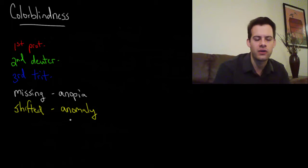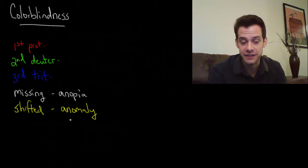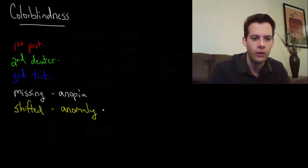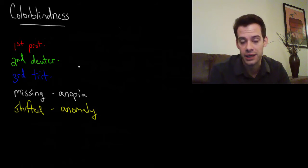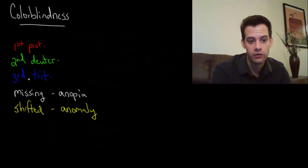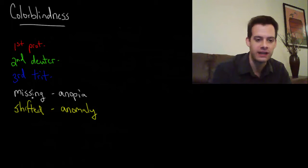Then another thing that can happen is that the cone's sensitivity can get shifted. And this is the more common type of color blindness, is that one of the cone types is shifted, usually the red or green. So if it's your red cone type, the long wavelengths that are shifted, it's called protanomaly. If it's the green, it's called deuteranomaly. And this is the most common type of color blindness, deuteranomaly. And then if it's the third cone type, the blue short wavelengths that are shifted, then that's called tritanomaly.